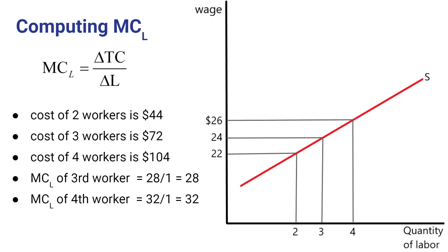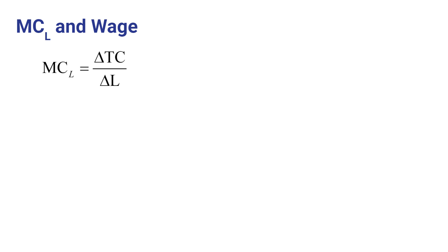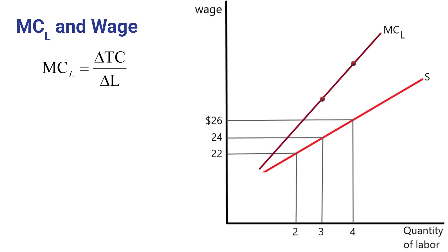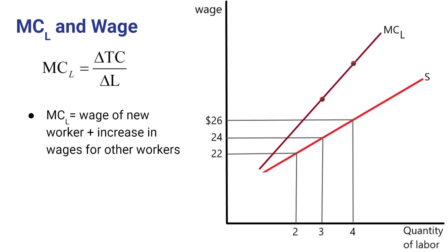Notice that in each case the marginal cost of adding that worker is greater than the wage rate paid to the additional worker. This is something the firm has to take into account, because whenever it adds more workers, it raises the cost not just of the last worker, but of all workers. If we were to plot the marginal cost of labor on the same graph, we would end up with something that looks roughly like this. In general, the marginal cost of an additional worker will always equal the wage of the additional worker plus the increase in wages that it has to pay for the other workers.